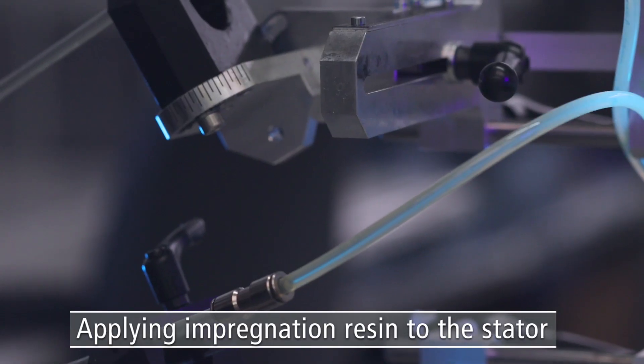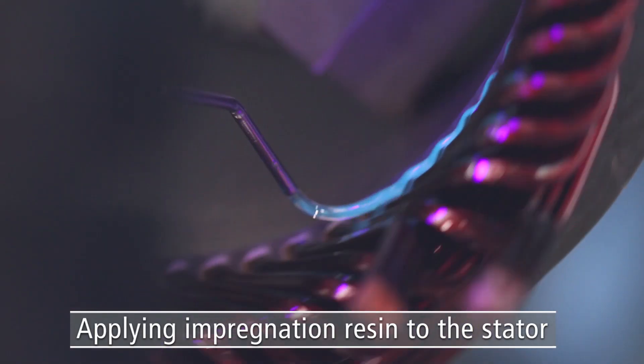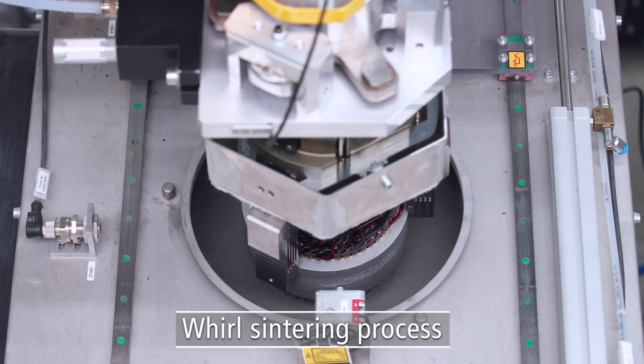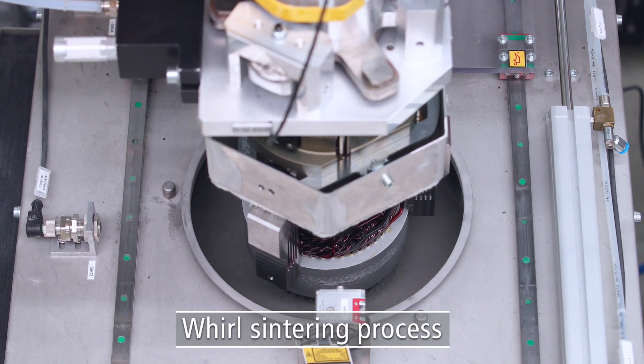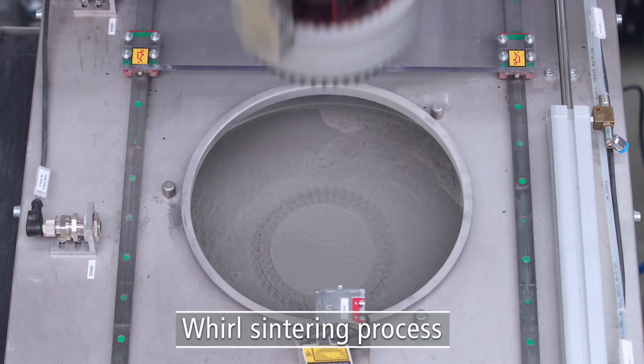Impregnating resin is applied in doses while the stator is continuously rotated. Welded wire ends are separately protected again against corrosion by a whirl-sintering process.